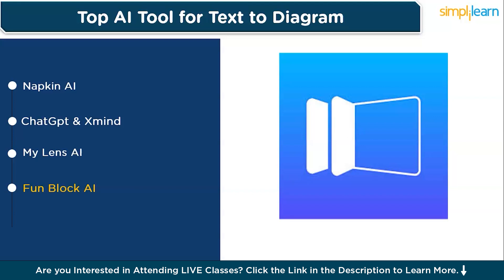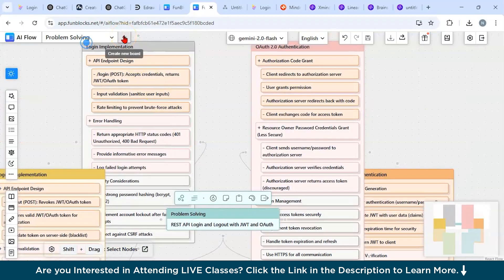You can easily customize the colors, shapes, and interactivity, which allows for highly personalized diagrams — very important for engaging your audience. Whether you are designing content for a classroom or a business presentation, Funblock AI helps make complex concepts more understandable and fun. Funblock AI also offers a free version with basic features; additional templates and customization options start at around $12 per month.